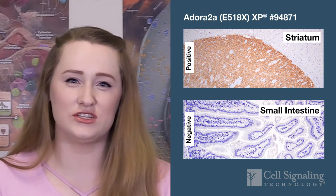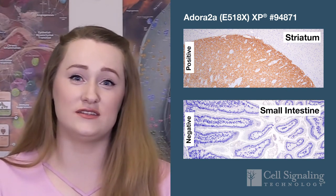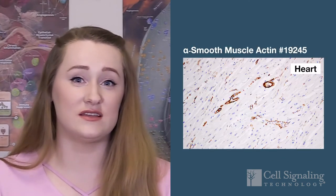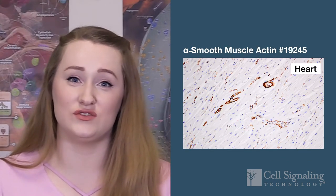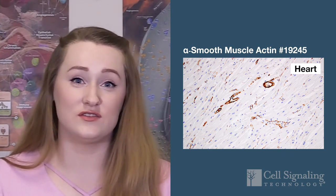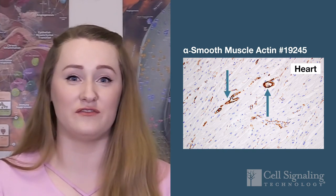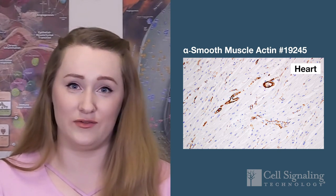It's important to check you aren't applying your antibody at too high of a concentration, since this can lead to off-target binding. In some cases, you may be able to obtain tissues with both positive and negative cell types present. For example, in the heart, smooth muscle actin is present in the vascular smooth muscle cells that make up the blood vessel walls, but it is not present in the surrounding cardiac muscle.